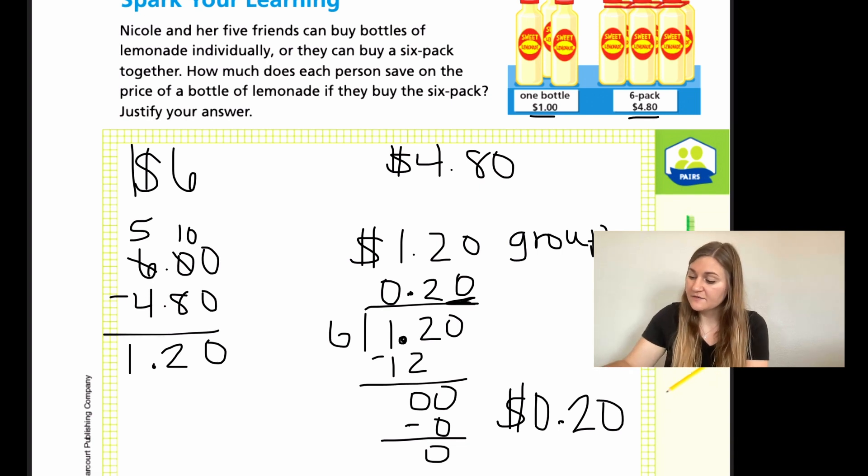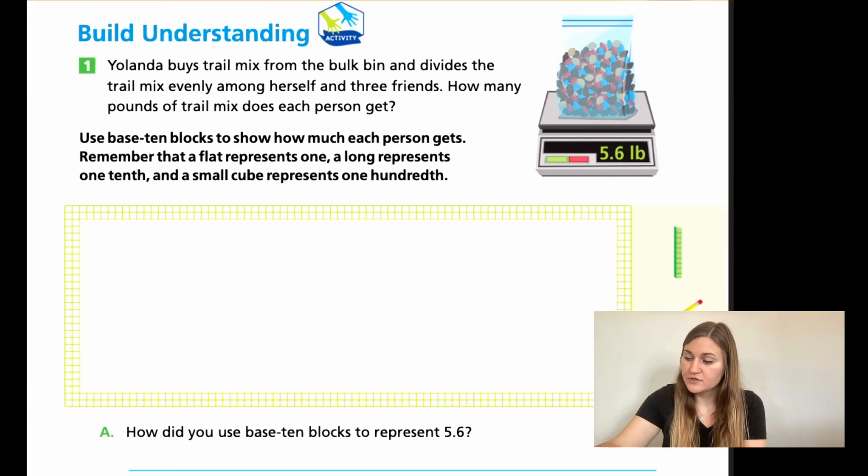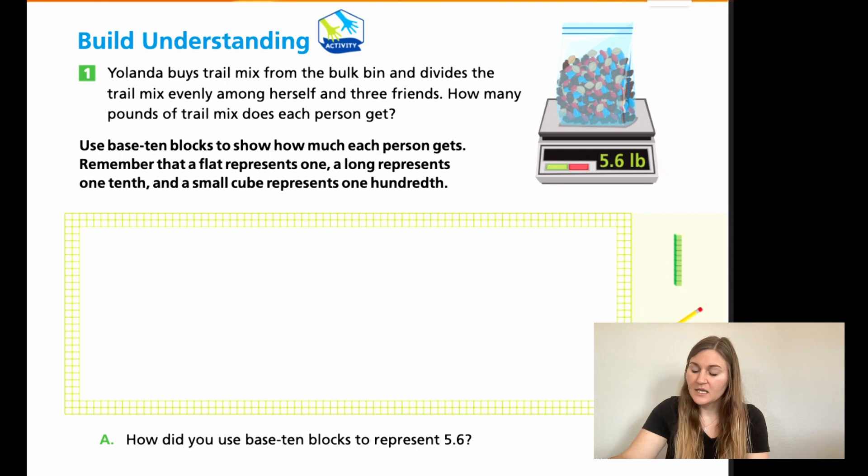Alright, let's go ahead and flip the page. We're going to be on page 426. Number one says Yolanda buys trail mix from the bulk bin and divides the trail mix evenly among herself and her three friends. How many pounds of trail mix does each person get?